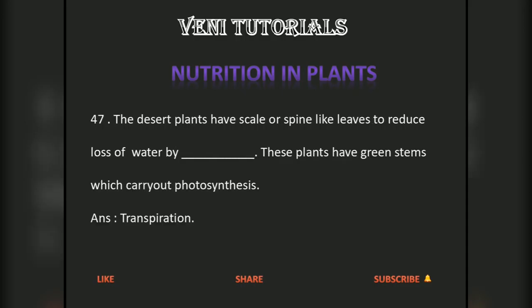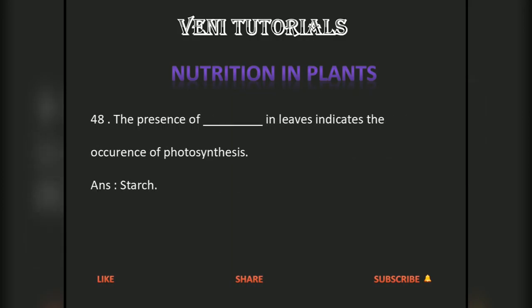The desert plants have scale or spine-like leaves to reduce loss of water by transpiration. These plants have green stems which carry out photosynthesis. The presence of starch in leaves indicates the occurrence of photosynthesis.